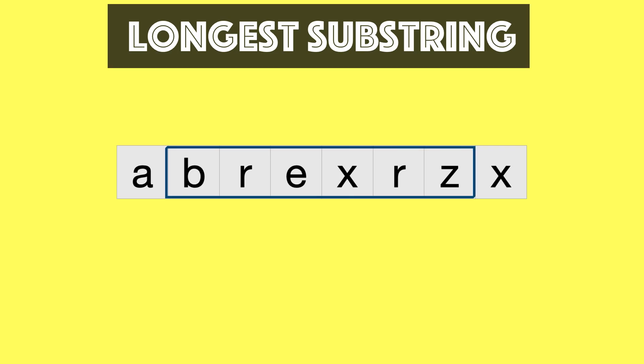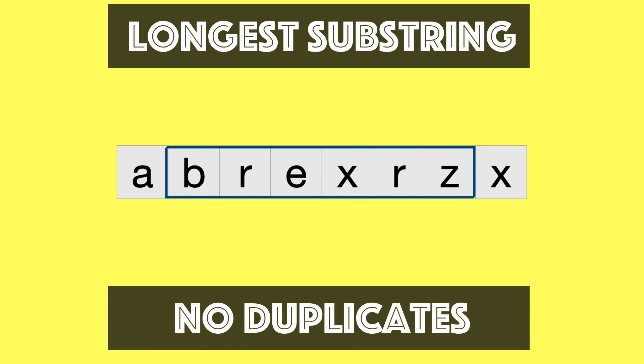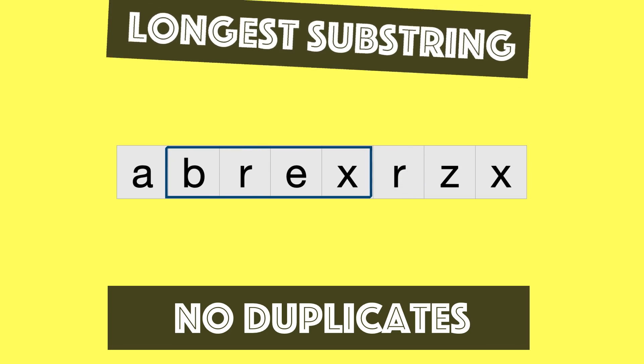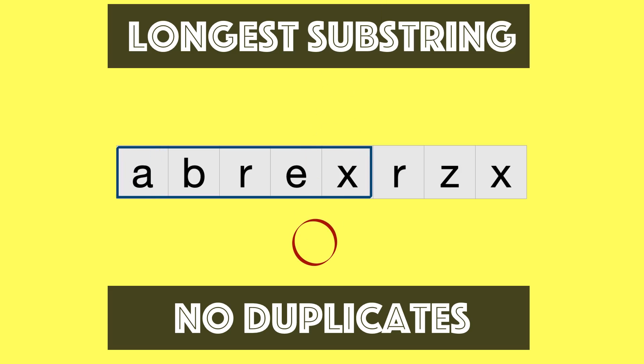The problem talks about finding the longest substring in a given string which has no duplicates at all. So in this case, if you will see the R is actually duplicating, which means we cannot make such a substring. It's not valid. So brex is now a valid substring, but again we have to make the longest substring. So we make sure to extend up to A and now this is the longest substring which has no duplicates. So the answer for this string will be 5.